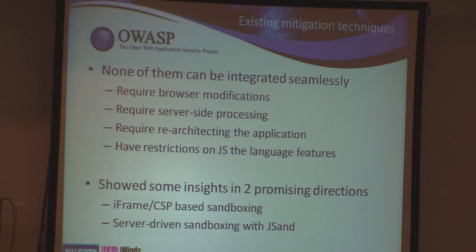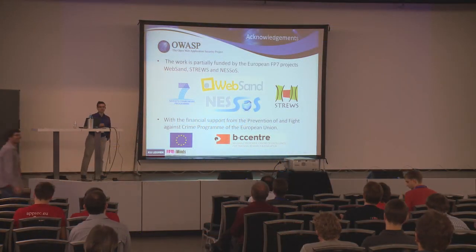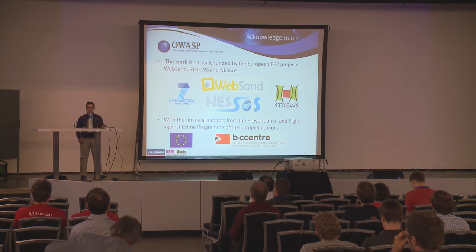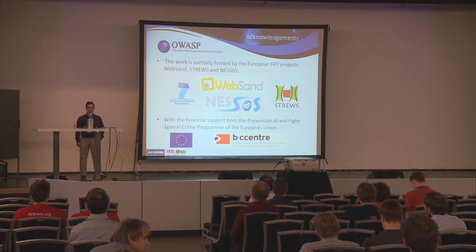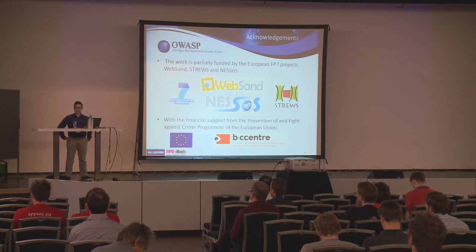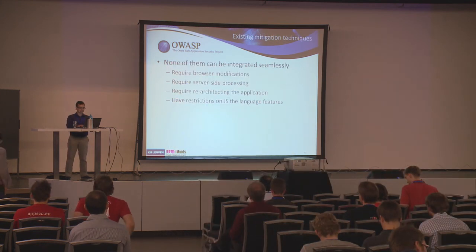To conclude: more than 88% of websites integrate content from an external script provider, and by far Google is the absolute number one. Malicious JavaScript appears over and over via different attack vectors — the script owner becoming malicious, getting compromised like in the QTip example, or through stale domain registration and typosquatting. None of the existing mitigation techniques is a silver bullet, but two promising sandboxing directions were presented — the coarse-grained iframe/CSP approach practical today, and the fine-grained JSAND approach using Secure ECMAScript and proxy APIs. Thank you.